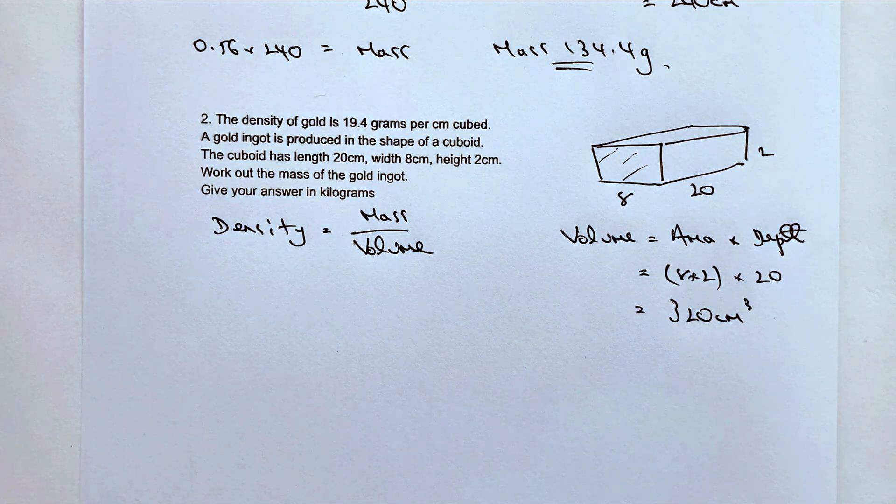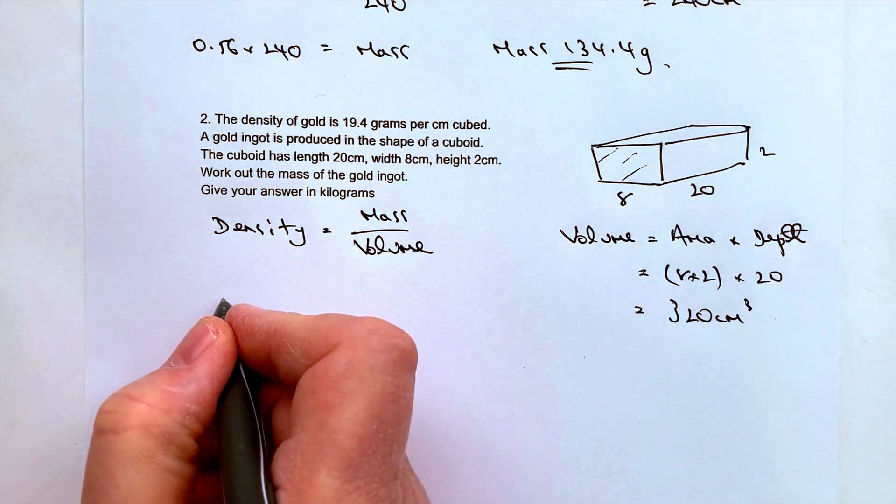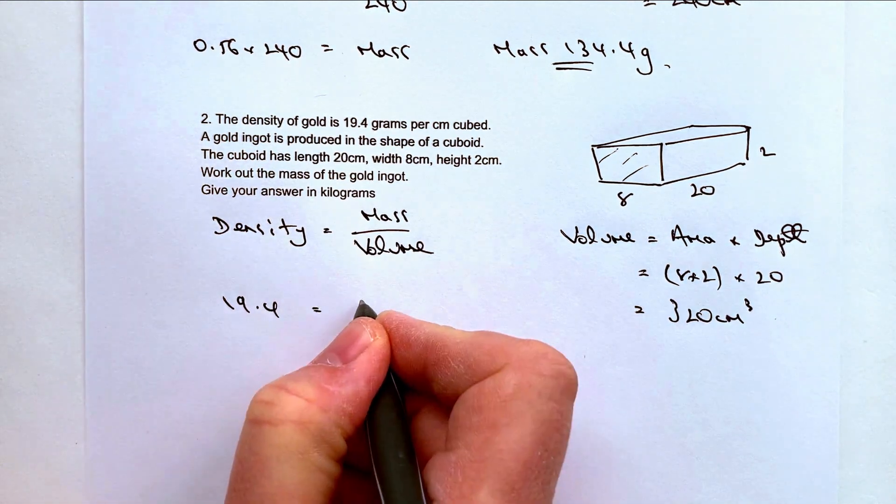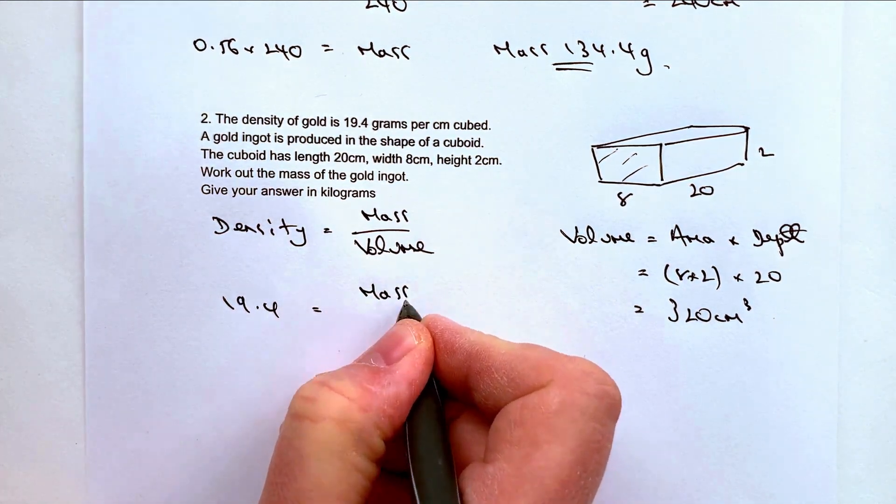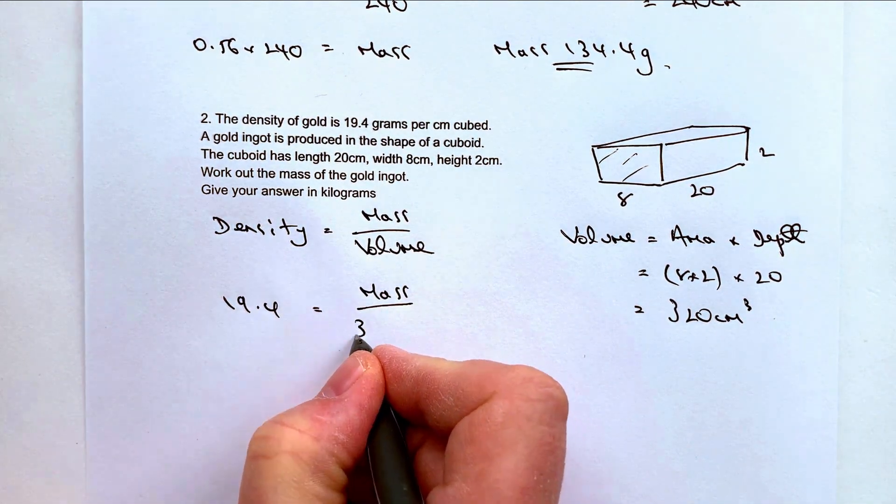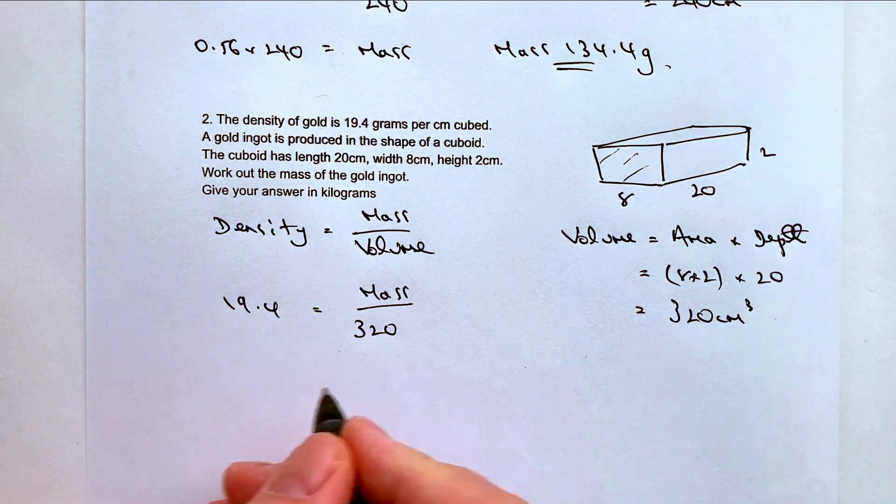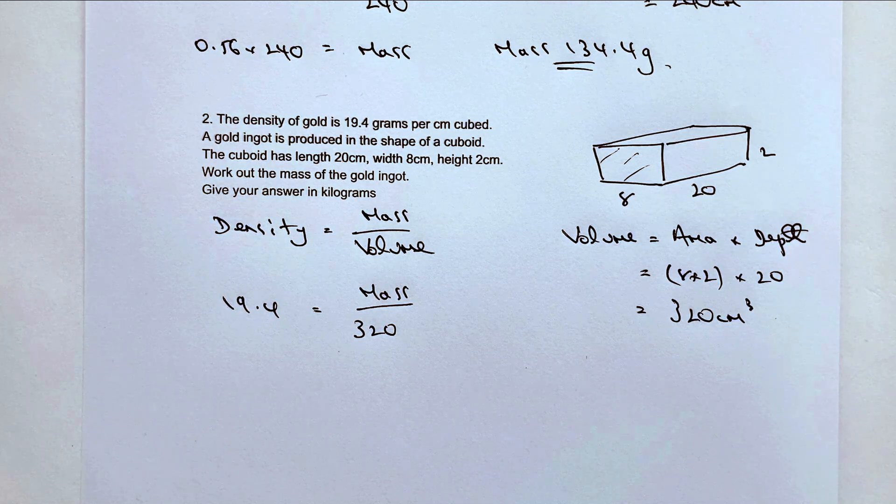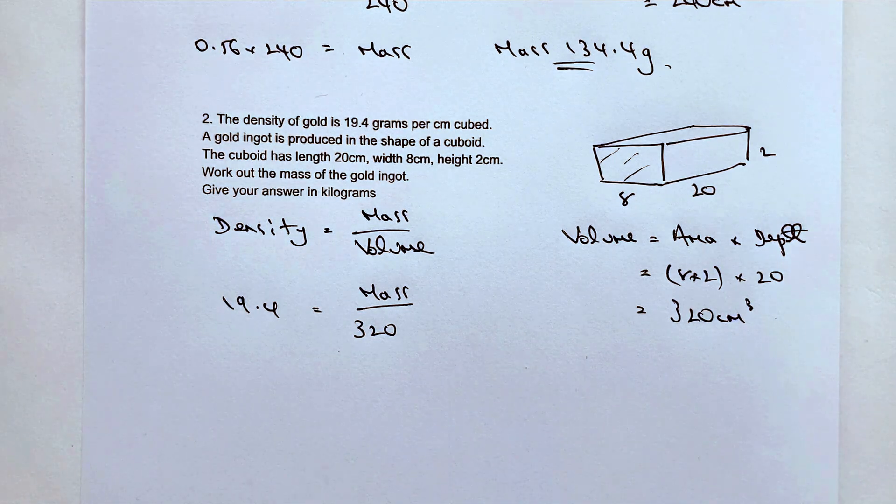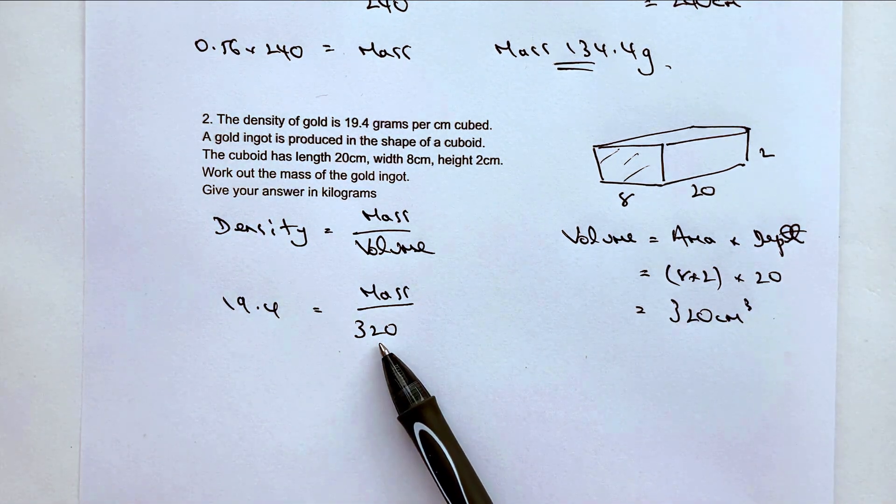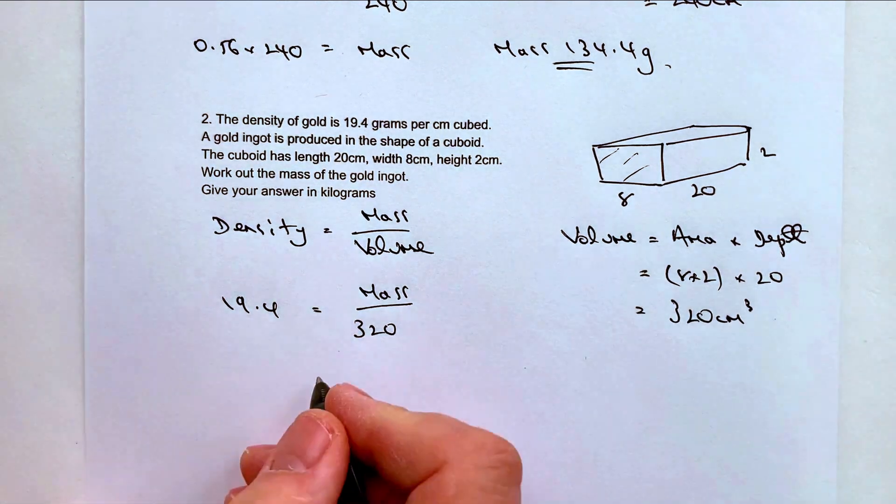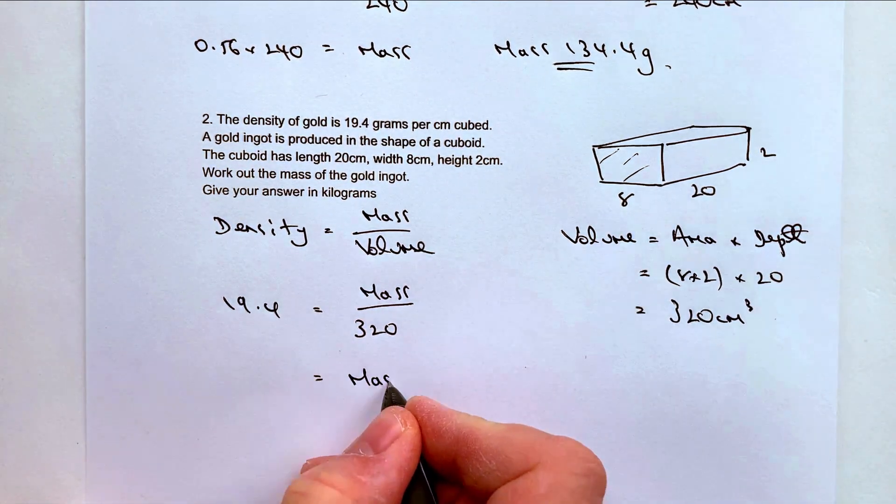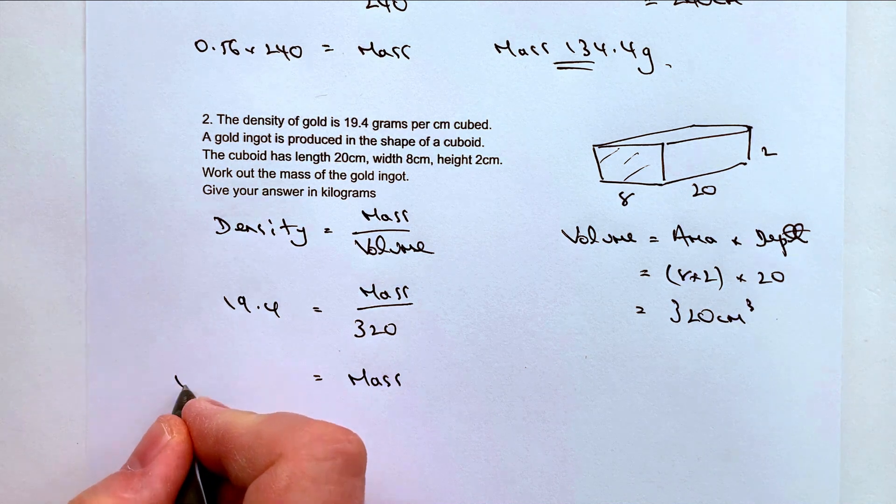Which is excellent for this type of calculation, so no problems at all with this. So let's pop in the numbers. So density is 19.4, mass we don't know we're being asked to work out, but the volume we've just worked out is 320. So again I'm going to multiply both sides of the equation by 320 in order to lose this particular denominator.